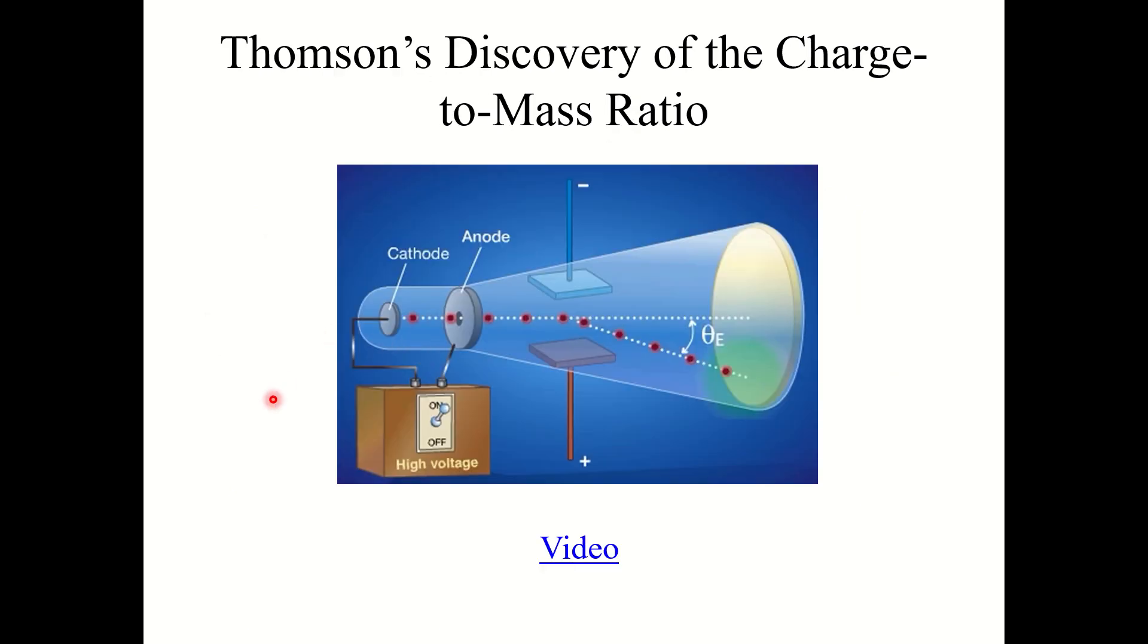Now how exactly did he use this to discover the charge-to-mass ratio? Well I would recommend taking a minute, download the PowerPoint slides and watch this video for yourself. It goes into a little bit more of an explanation. But essentially he was able to measure the angle of deflection versus the strength of the electric field. And so using the angle of deflection and the strength of the electric field produced by these charged plates, he was able to determine the charge-to-mass ratio of the electrons that made up the cathode ray.